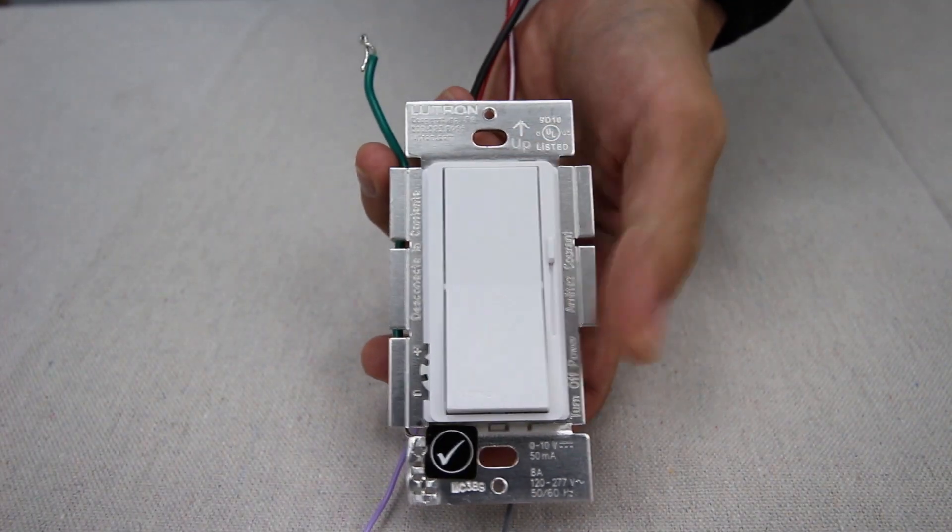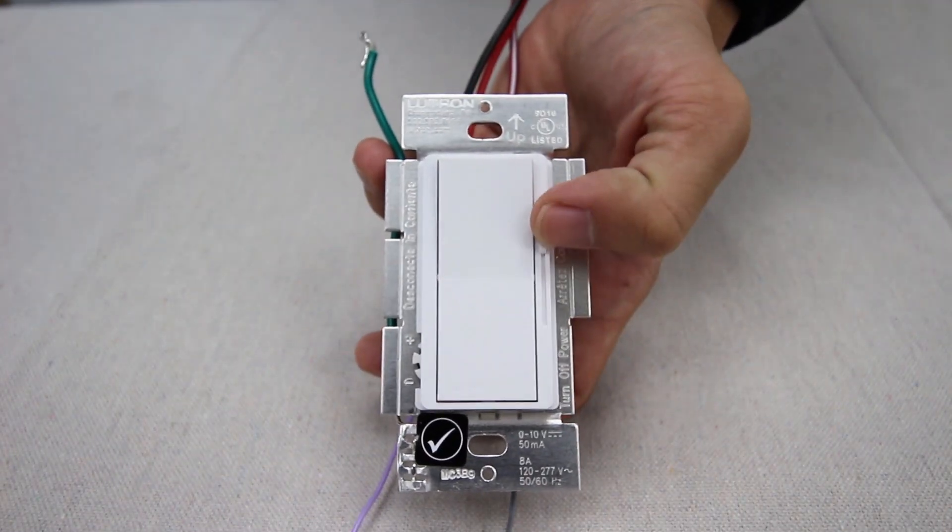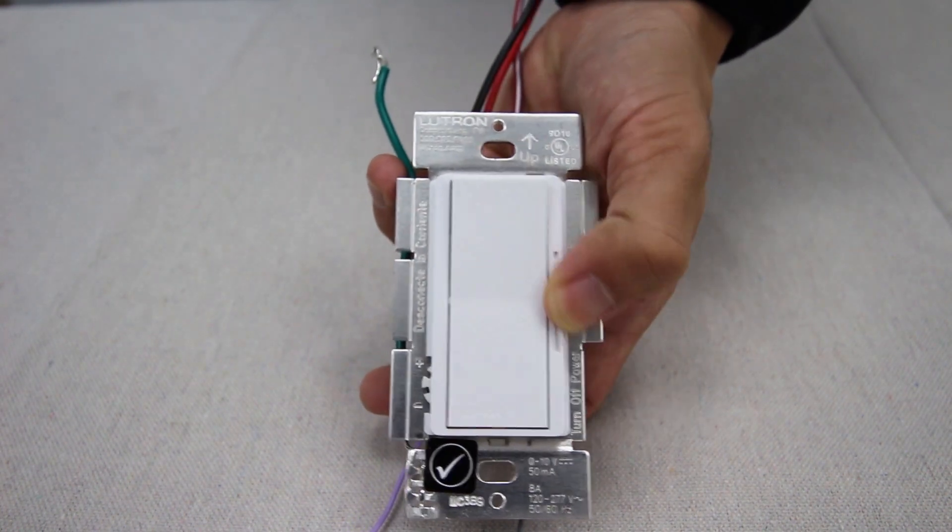So when you're shopping for one, make sure to look for a 0-10 volt dimmer. We recommend the Lutron Diva 0-10 volt dimmer which has a max load of 450 watts.